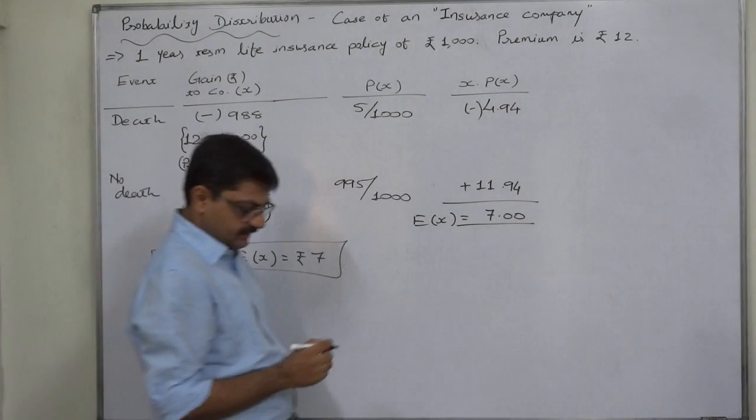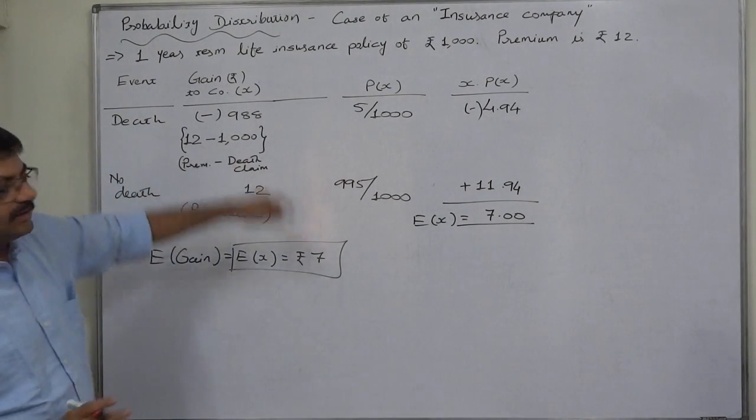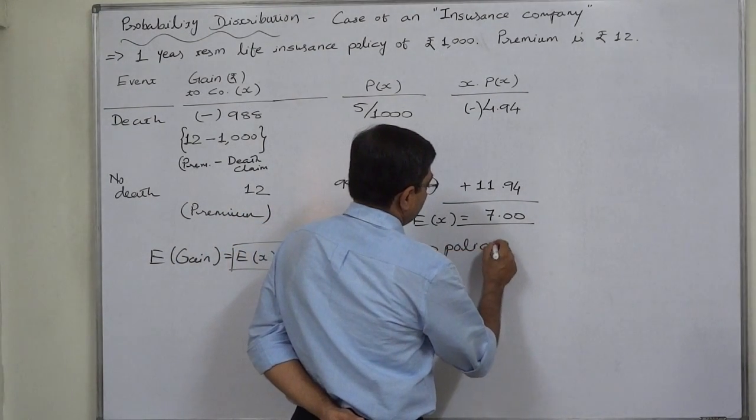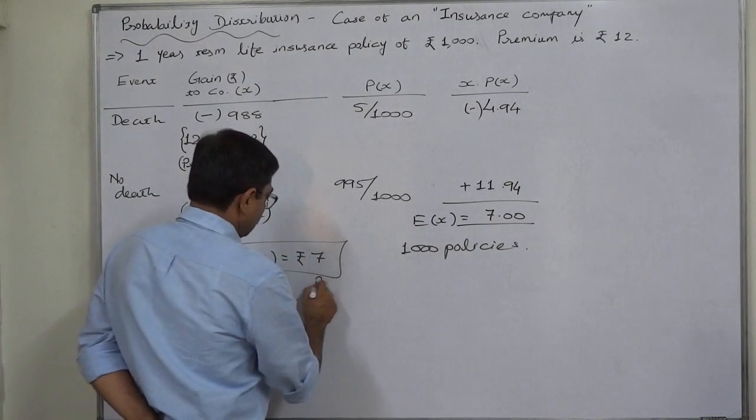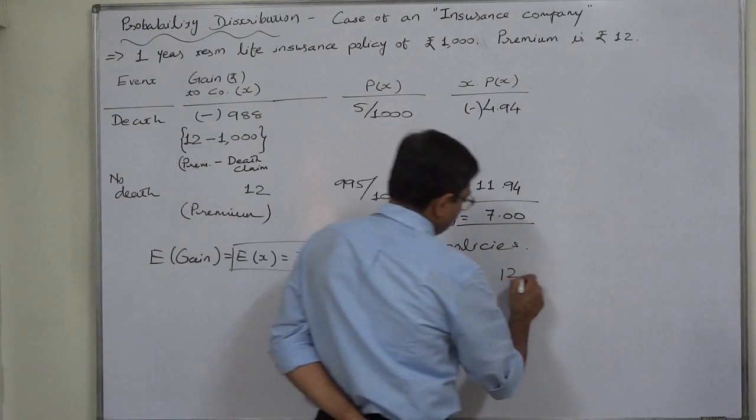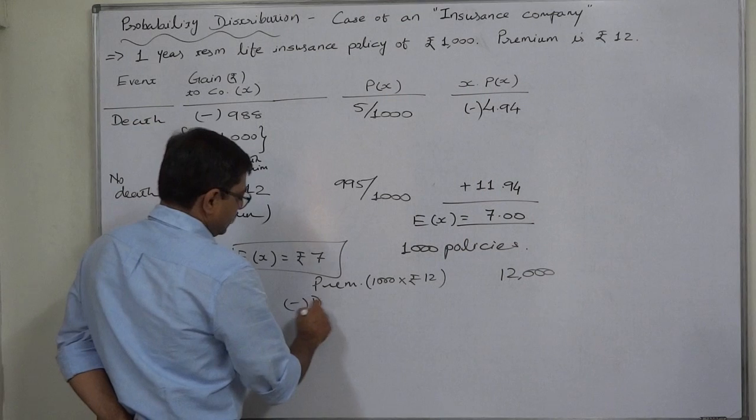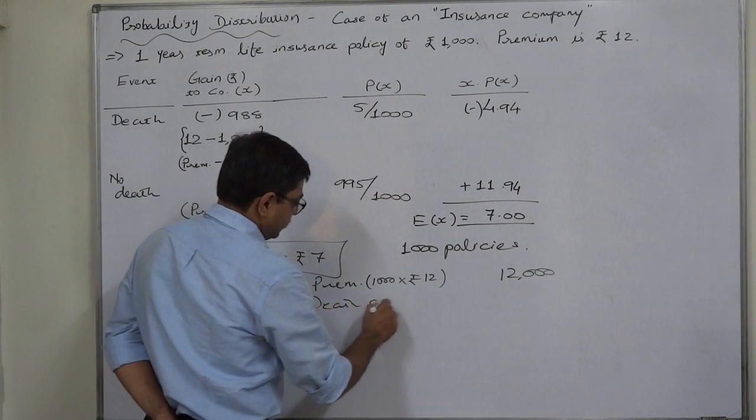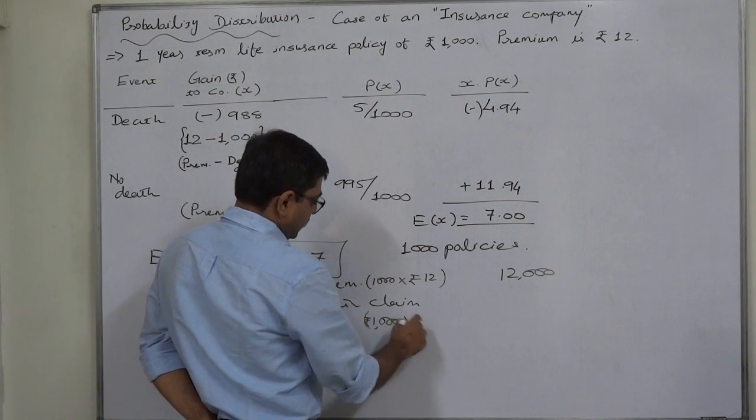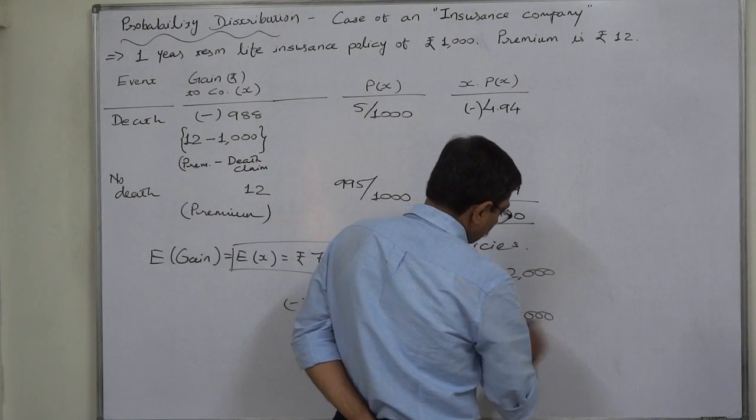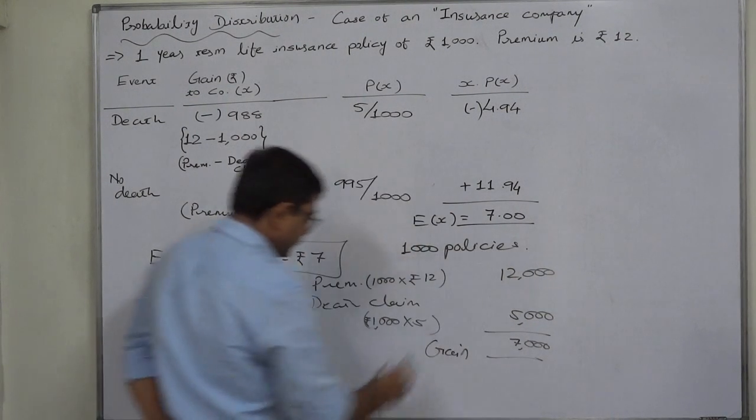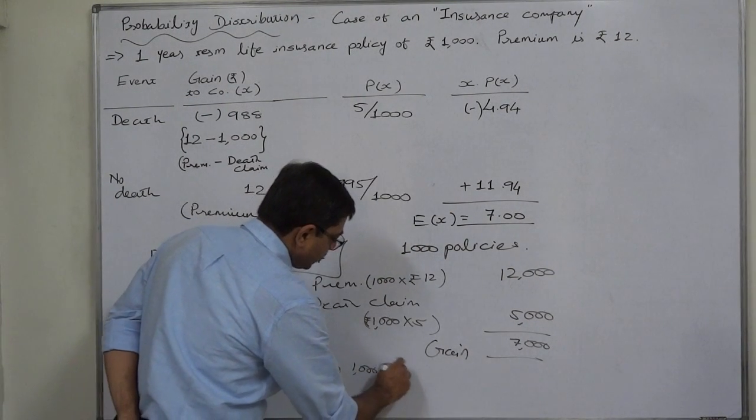Let us reconcile that. Suppose the company sells this kind of policy to exactly 1000. What will happen? The company will receive premium of rupees 12 into 1000 that is 12,000. Out of which 5 persons will die. The company will have to pay death claim of rupees 1000 into 5, that is 5000. Net gain of the company is rupees 7,000, but on 1000 policies of this kind.